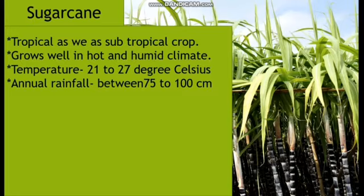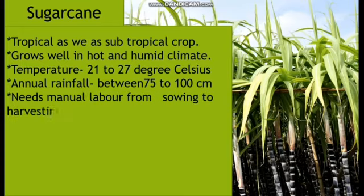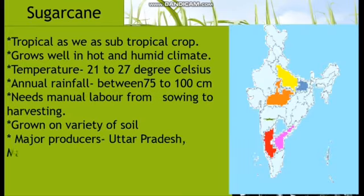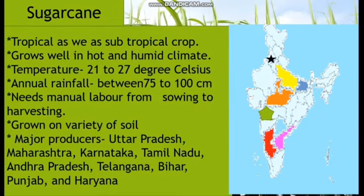If water is insufficient, sugarcane can still be cultivated with irrigation. That is why in the Deccan Plateau region of Maharashtra — which is not a heavy rainfall area — sugarcane is grown on a large scale due to suitable soil, climate, and irrigation facilities. This crop requires a lot of manual labor from sowing to harvest. Major sugarcane producing states are Uttar Pradesh, Maharashtra, Karnataka, Tamil Nadu, Andhra Pradesh, Telangana, Bihar, Punjab, and Haryana.